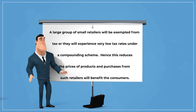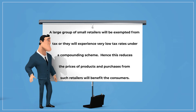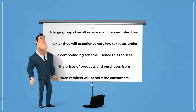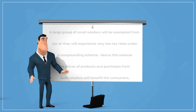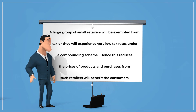A large group of small retailers will be exempted from tax or will experience very low tax rates under a compounding scheme. This reduces the prices of products, and purchases from such retailers benefit consumers. The consumption rate increases as a result of lower prices of goods and services.